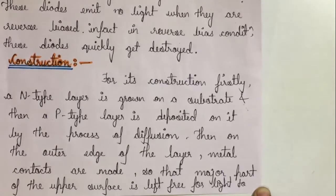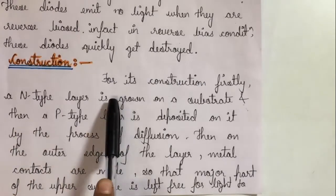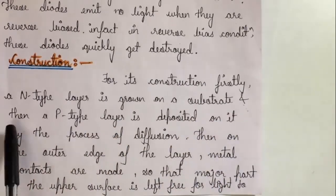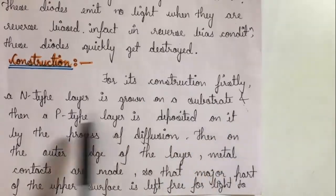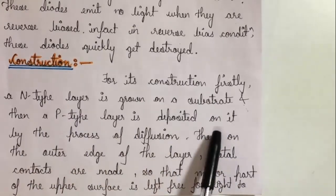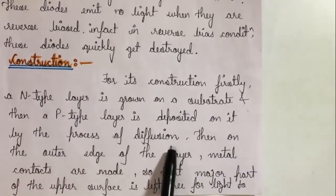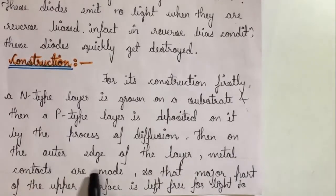The next part of our question is the construction of LED. For its construction, firstly an N-type layer is grown on a substrate, and then a P-type layer is deposited on it by the process of diffusion. Then on the outer edge of the layer, metal contacts are made so that the major part of the upper surface is left free for light to escape out.